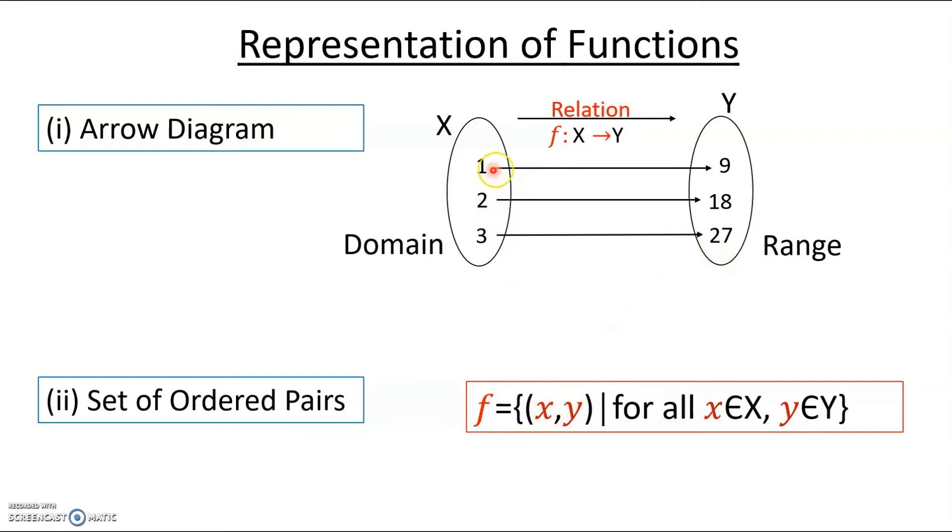You can have many set of ordered pairs using these two Cartesian products - (1,9), (1,18), (1,27) - but in this function f, your (x,y) will be 1 and 9. Similarly 2 and 18, 3 and 27.